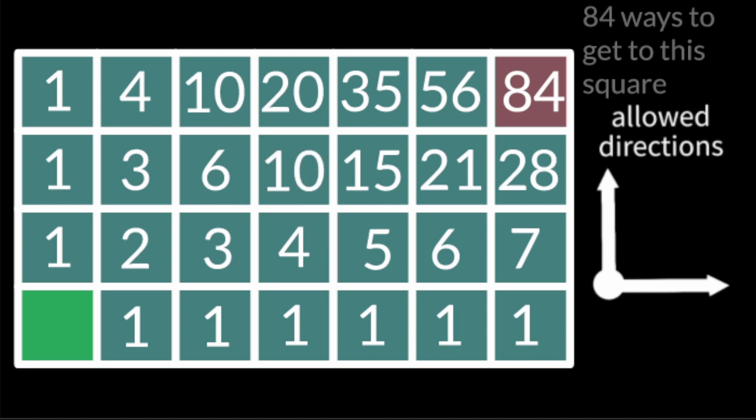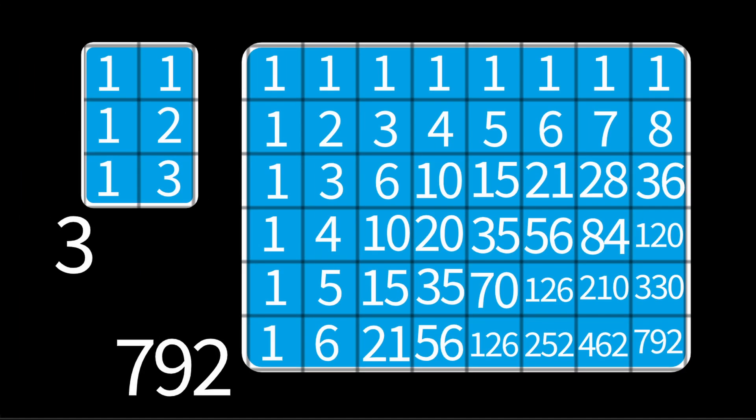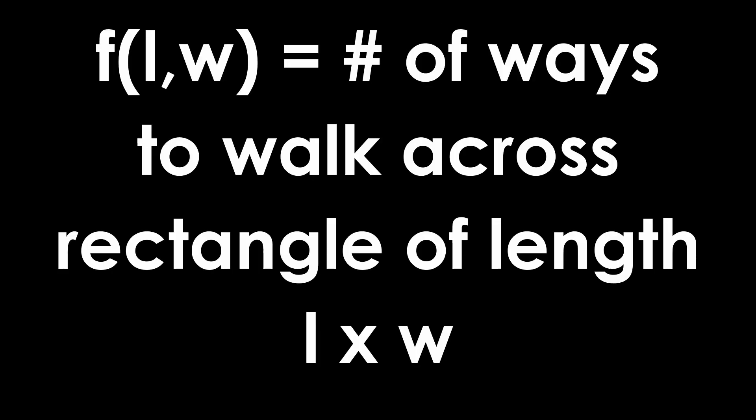The only exceptions are the edge squares, but we have already figured out that all of them have only one solution. This means that the number of solutions can be easily found for any sized rectangle — all you need to do is create Pascal's Triangle on the squares until you reach the other corner. Now you might be asking, how do we do that mathematically? In the next section, we will figure out how to do it more mathematically by creating a function with two inputs corresponding to the dimensions of the rectangle, which will output the number of solutions.